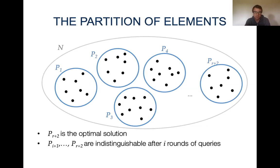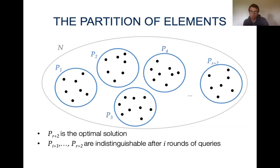Part R+2 is the optimal solution. What we want to show is that after i rounds of queries, all the elements in P_{i+1} through P_{R+2} are indistinguishable. In other words, we have R+2 different parts and at each round the algorithm can learn at most one part. After R rounds, there will still remain two last parts that are indistinguishable — which is why we cannot minimize the submodular function.